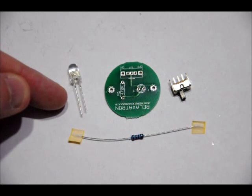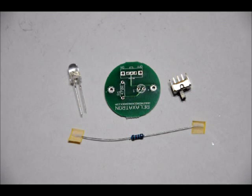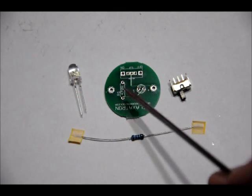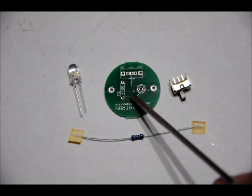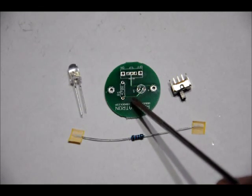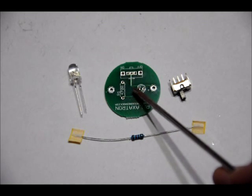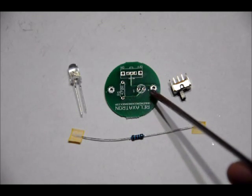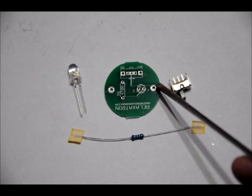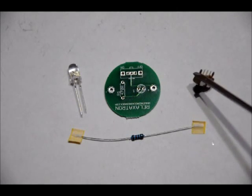The rainbow LED has a short lead and a long lead. The short lead goes in the left pin from this perspective. There's a little indicator labeled L1 for LED1. Place the short lead on the left pin facing L1 and the long lead on the right facing this side of the board from this perspective.